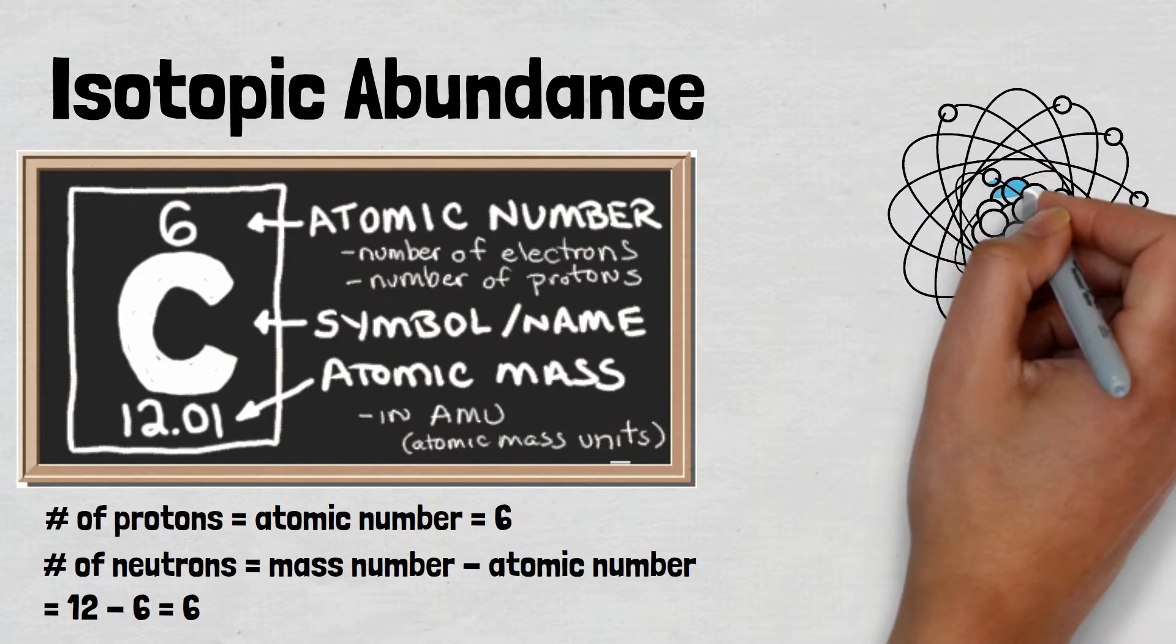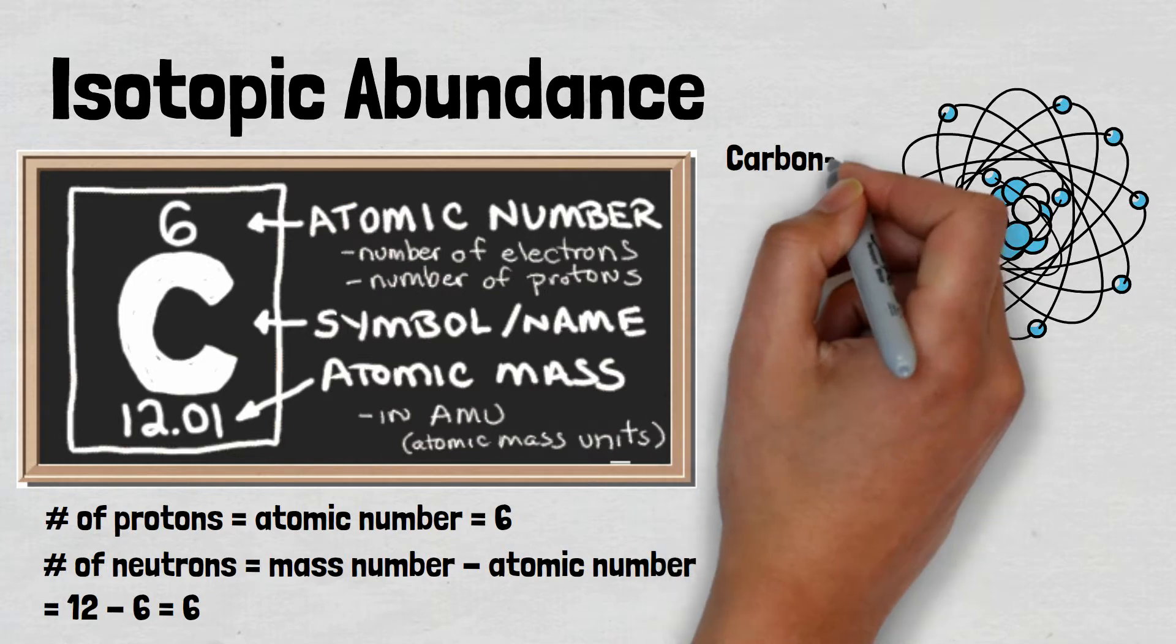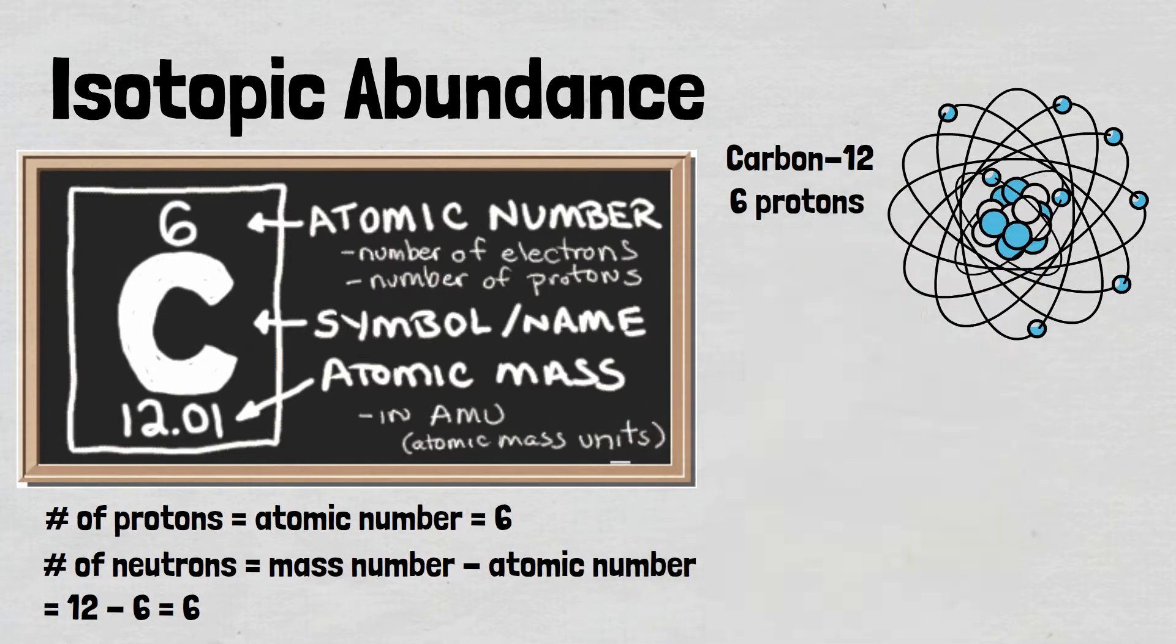But if both protons and neutrons roughly have a mass of 1 atomic unit, why are we rounding? Shouldn't the mass of carbon equal 12 atomic units, one for each proton and neutron?